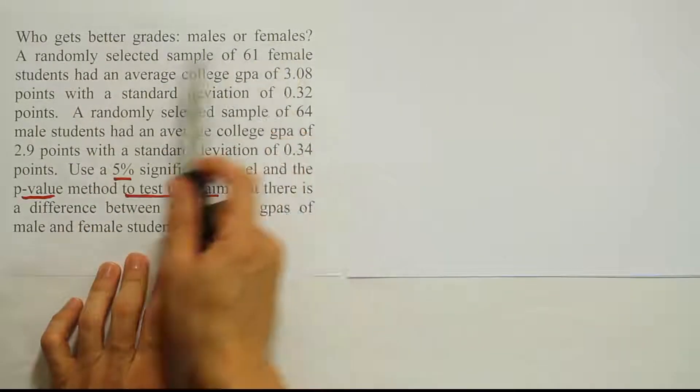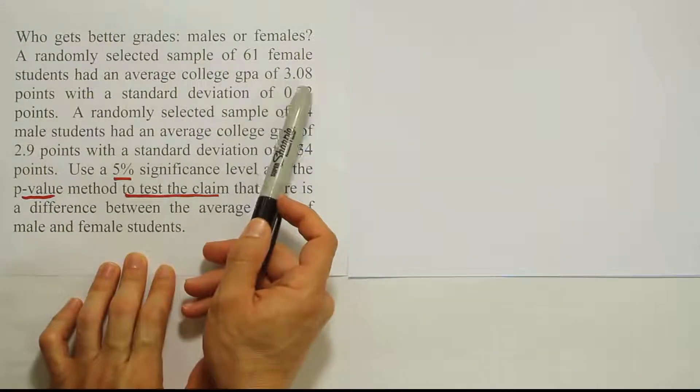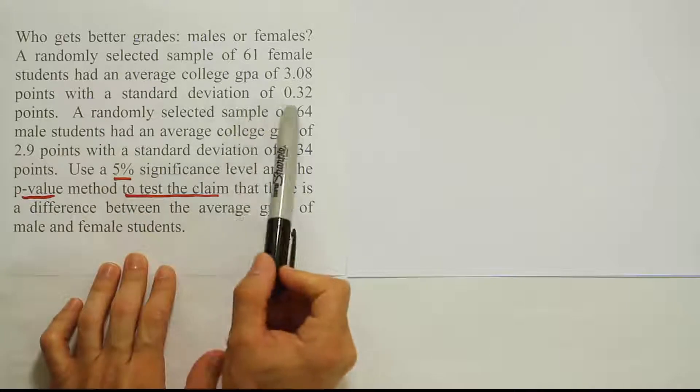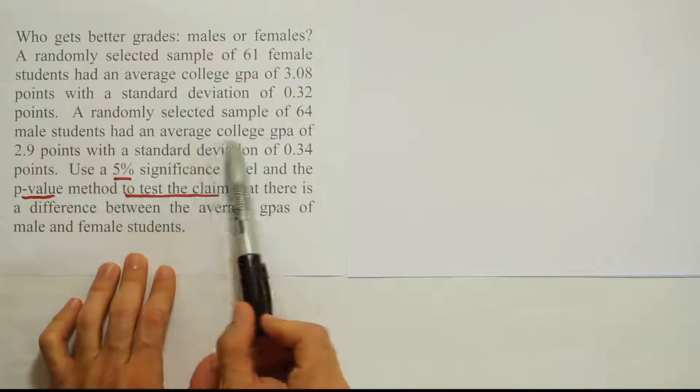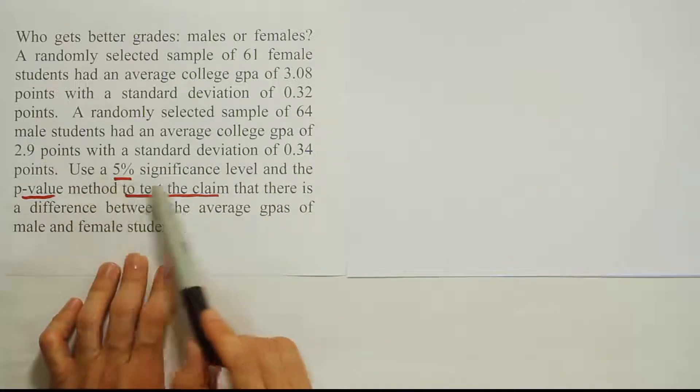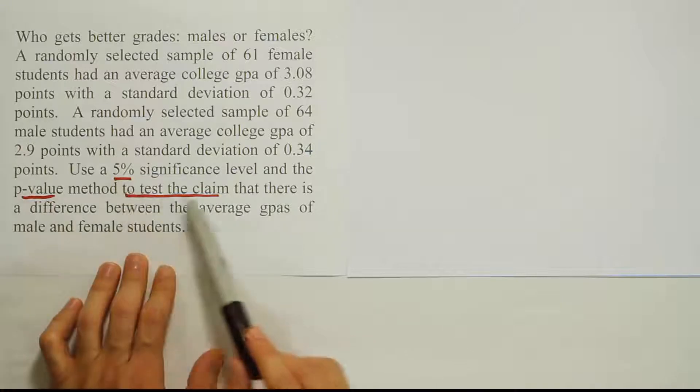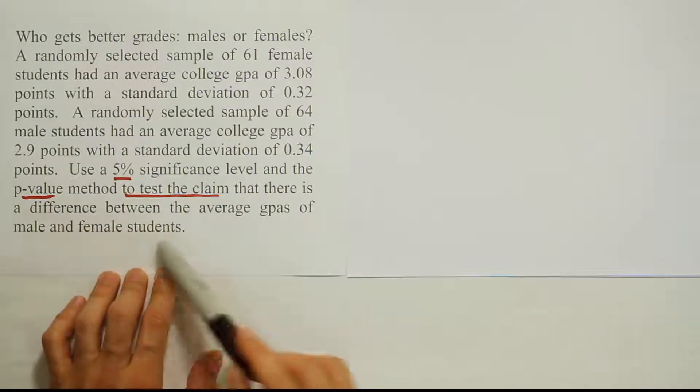Who gets better grades: males or females? A randomly selected sample of 61 female students had an average college GPA of 3.08 points with a standard deviation of 0.32 points. A randomly selected sample of 64 male students had an average college GPA of 2.9 points with a standard deviation of 0.34 points. Use a 5% significance level and the p-value method to test the claim that there is a significant difference between the average GPAs of male and female students.